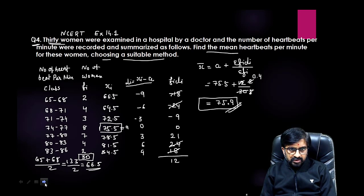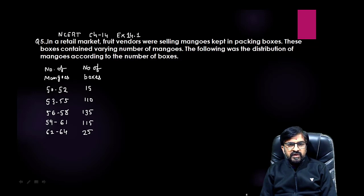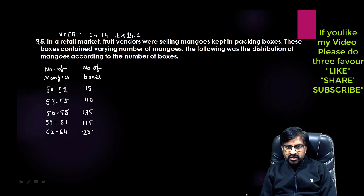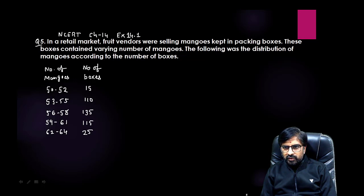Moving towards next question, question number 5. NCERT chapter 14 Statistics exercise 14.1 question number 5. In a retail market, fruit vendors were selling mangoes kept in packing boxes. These boxes contain varying number of mangoes. The following was the distribution of mangoes according to the number of boxes. This is the distribution and you need to find out the mean by suitable method. This is your class and this is your frequency.